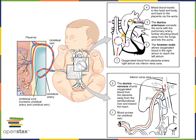That blood is forced down into the right ventricle through the tricuspid valve. But at the same time, some of this intermediate oxygen concentration blood moves from the right atrium directly into the left atrium through an opening known as the foramen ovale.